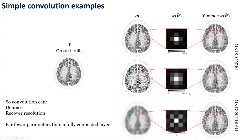We could also do de-blurring or resolution recovery — if we had a blurred image that we're trying to map to a ground truth, we could learn a kernel for that. A 5x5 kernel now has negatives in it, correctly doing the kind of differential operator needed to invert the blurring process and match the ground truth. Just one simple 5x5 kernel with 25 parameters can do quite useful image processing — denoising, recovering resolution — at the cost of hardly any parameters compared to a fully connected layer with millions of parameters.